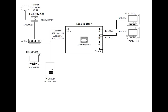Right now everything is set up statically on all these devices. I've got static IP addresses set up. I have DHCP enabled on 10.10.2.1 on the 10.10.2 network, but I'm not really using it right now, so I want to go ahead and set that up.